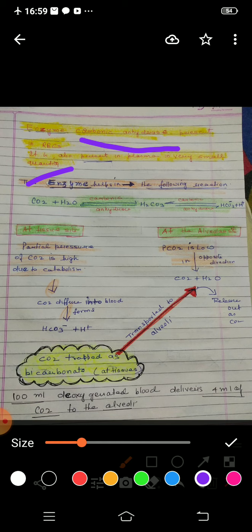With the help of a reaction, we can understand how carbonic anhydrase works. Carbon dioxide and water form carbonic acid. Then carbonic acid breaks down into bicarbonate ions and hydrogen ions. This reaction is reversible — bicarbonate ions and hydrogen ions can again form carbonic acid, which can again break down into CO2 and H2O.